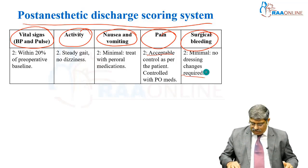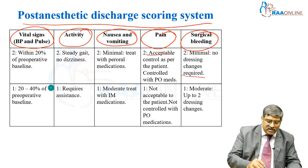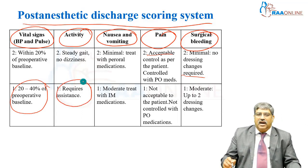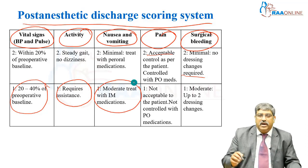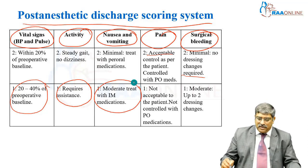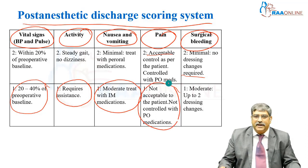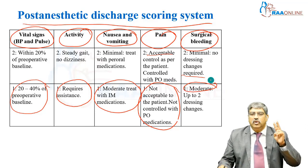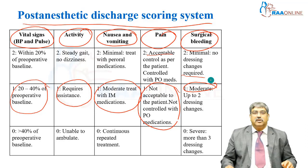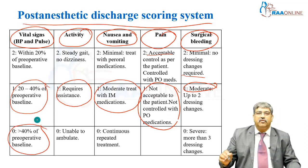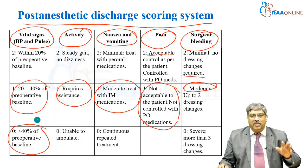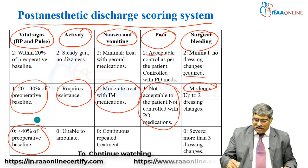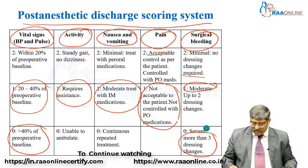A score of 1 is given when vital signs are 20–40% from the pre-operative baseline, activity requires assistance, nausea and vomiting is moderate requiring intramuscular medication, pain is not controlled with oral medication and not acceptable to the patient, and surgical bleeding is moderate requiring up to 2 dressing changes. A score of 0 is given when vital signs are greater than 40% from the pre-operative value, the patient is unable to ambulate, nausea, vomiting, and pain require continuous or repeated treatment, and bleeding is severe requiring more than 3 dressing changes.